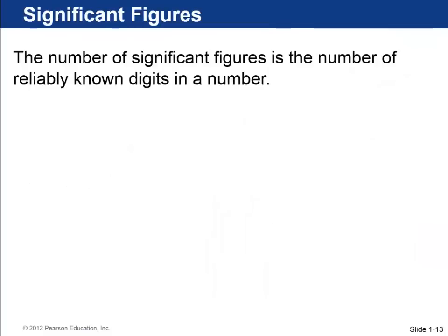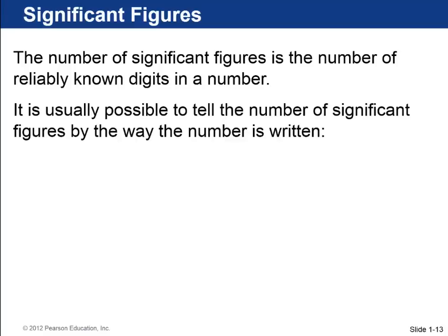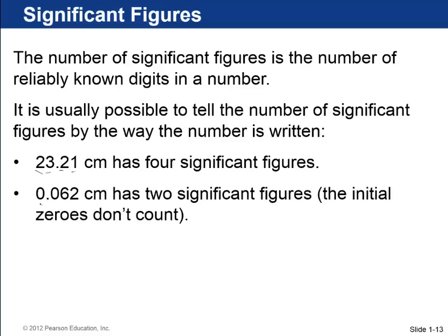Okay. Significant figures. So the number of significant figures in a number is the number of reliably known digits that matter. So, for example, 23.21, you count along there, you see it has two, three, two, and one. So that's four significant figures. 0.062, what happens here is that six and two are significant, but these two zeros are placeholders. They tell you the tenth place there that this six is actually a hundredth. So the initial zeros don't count as significant figures.